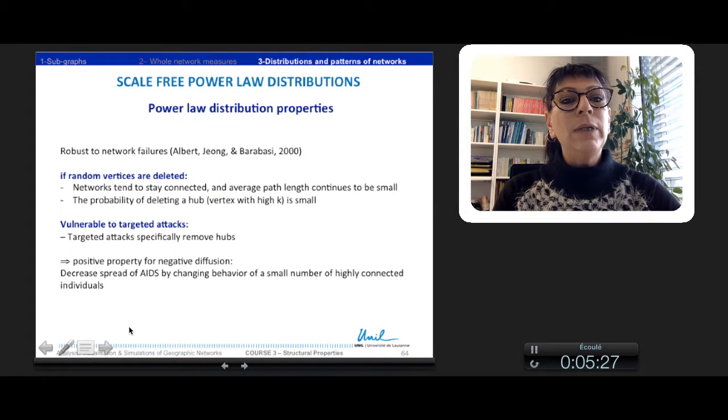The average path length continues to be small, and the probability of deleting a hub or a vertex with a high degree k is quite small.